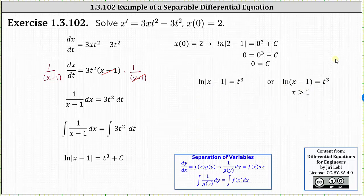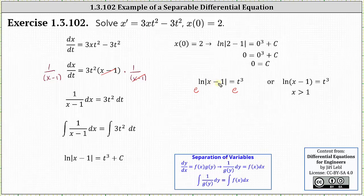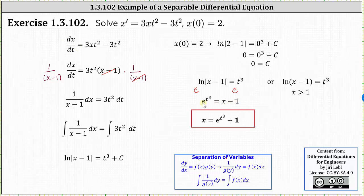The last step is to solve the equation for x, and we can do this two ways. One way is to write the log equation as an exponential equation. Recall natural log is log base e, so the equivalent exponential equation is e raised to the power of t cubed equals the absolute value of the quantity x minus one. We can drop the absolute value because e to the power of t cubed is always greater than zero. The other option is to exponentiate both sides using base e: e raised to the power of natural log absolute value of x minus one equals e raised to the power of t cubed, which simplifies to the absolute value of x minus one equals e to the t cubed. Again, because the exponential is always positive, we can drop the absolute value, giving us x minus one equals e to the power of t cubed.